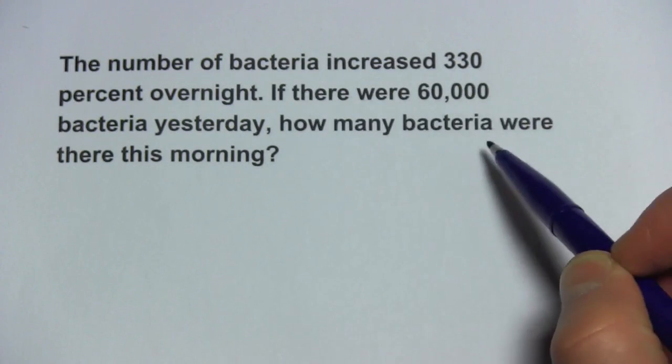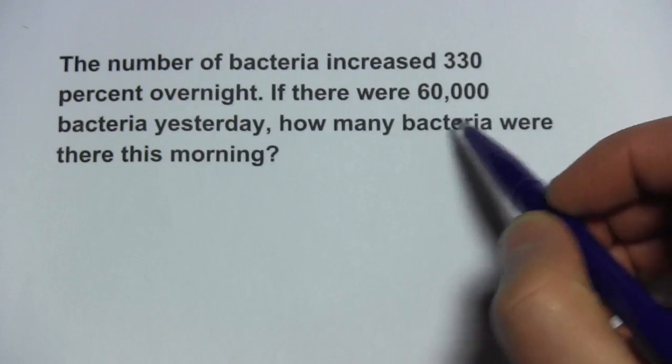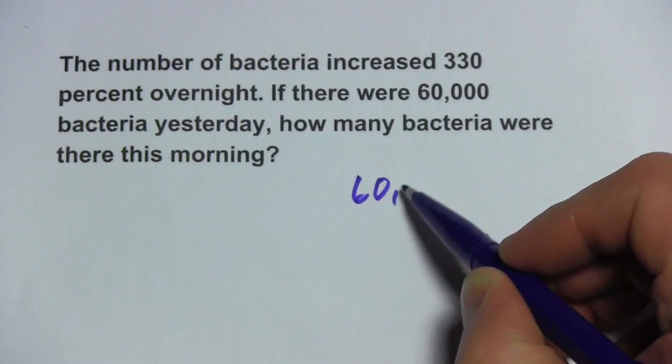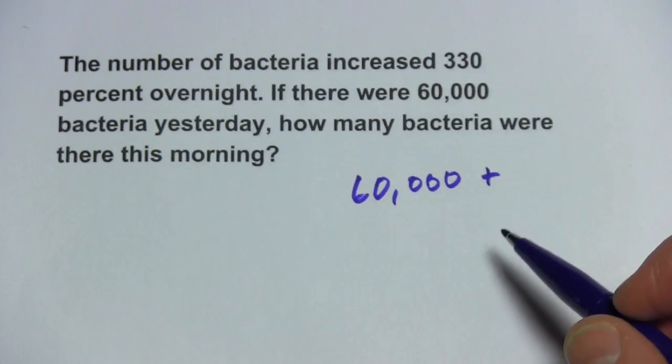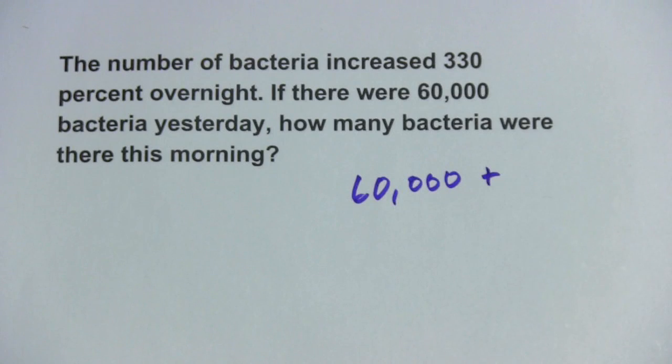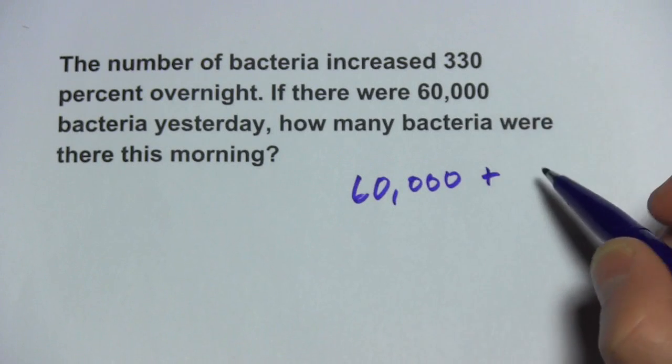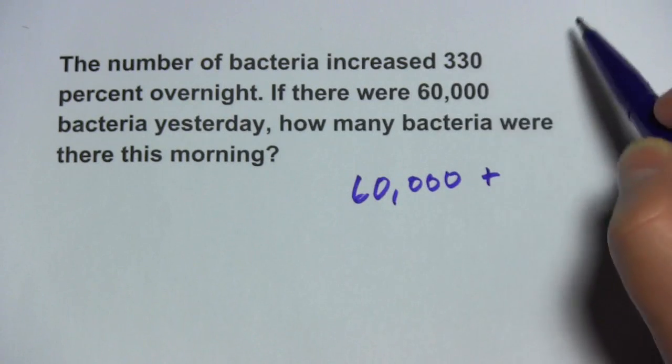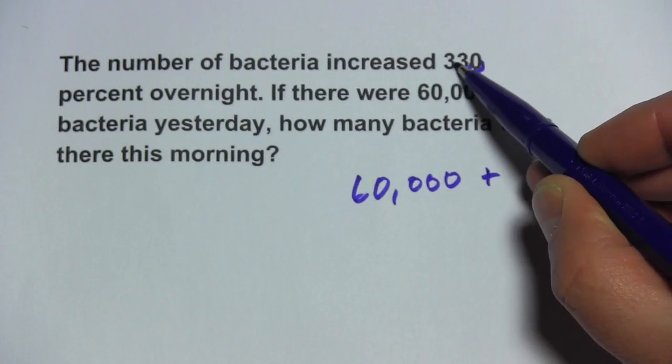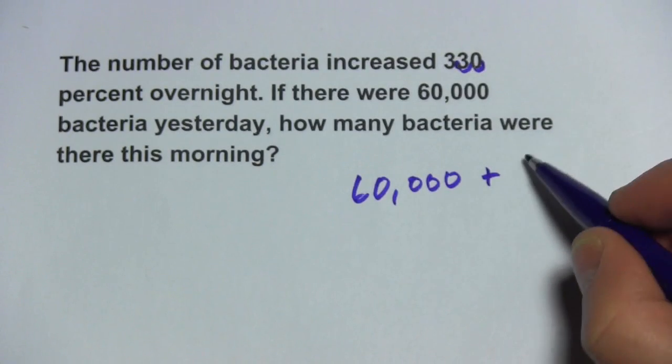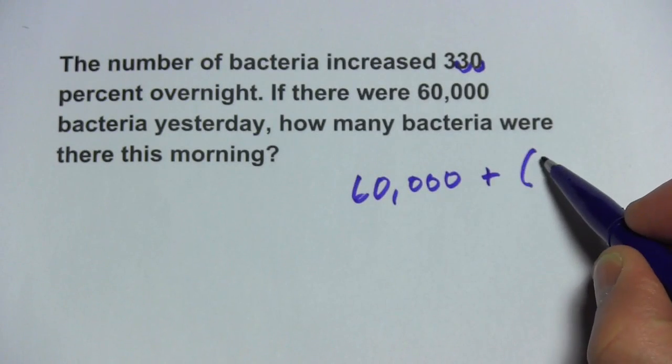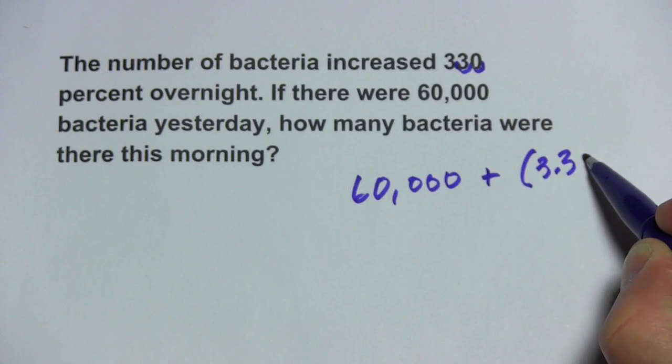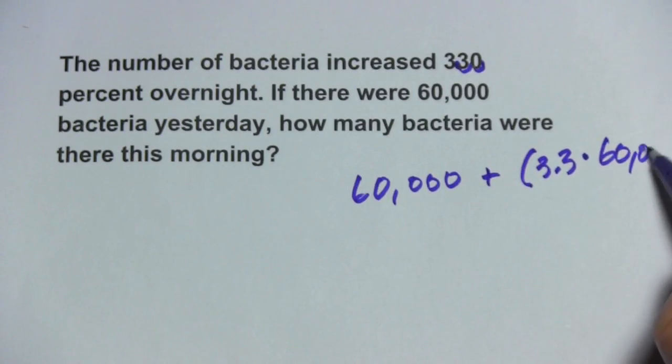So there's really two parts to this problem. You have 60,000 bacteria to start and then what you're going to add to it is the percent that it increased by and that's 330%. Well, let's see, let's convert that to a decimal first by moving the decimal point two places to the left. So we're going to have 330% of 60,000, so that's 3.3 of is multiply 60,000.